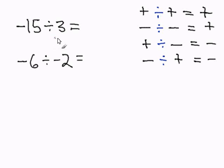Negative fifteen divided by three. In this problem, we have a negative divided by a positive. A negative divided by a positive gets us a negative. So our answer for this problem will be negative five.